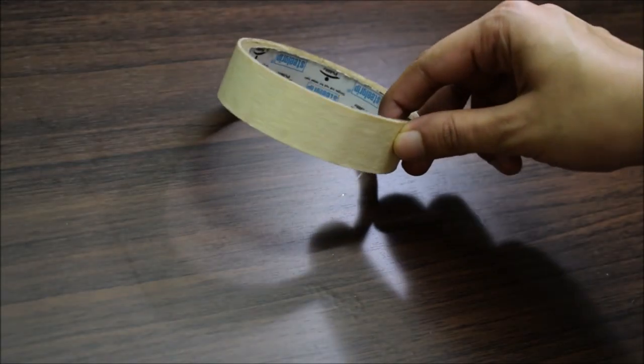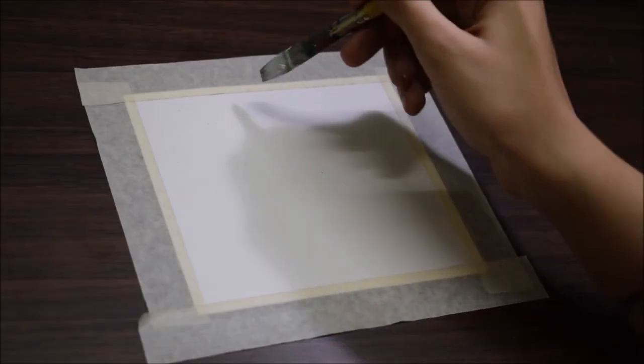The sheet I'm using here is of 200 GSM Brock's 5x5 inches in dimension and I'm using a masking tape to fix it on my table.